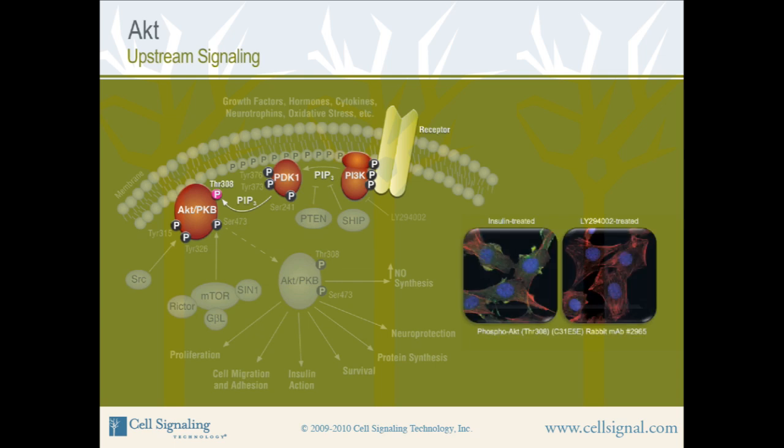This IFIC analysis shows C2C12 cells treated with either insulin or the PI3K inhibitor LY-294002, using phospho-AKT threonine 308 rabbit monoclonal antibody, product number 2965, labeled in green. Insulin treatment causes signaling through PI3K, resulting in PDK1 phosphorylation of AKT threonine 308 at the membrane. Note clusters of green-yellow stain at the membrane in the left panel.